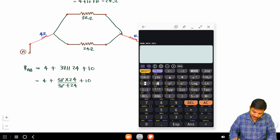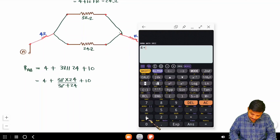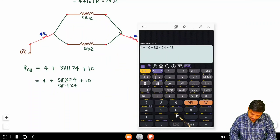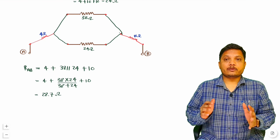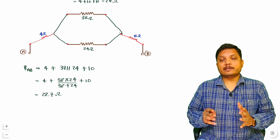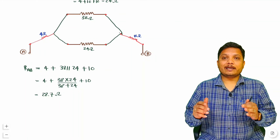Solving that in the calculator: 4 plus 10 plus 38 into 24 divided by 38 plus 24, that is 28.7 ohm. This is how we can resolve the equivalent network.